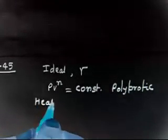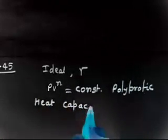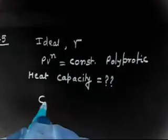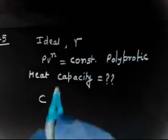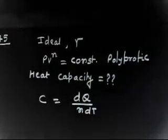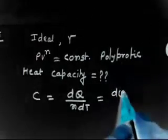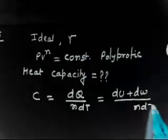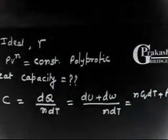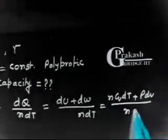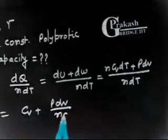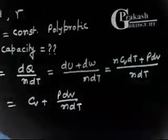We want to find the heat capacity for this process. We have already defined heat capacity C as dQ divided by n·dT. And dQ equals dU plus dW, so this gives us C equals dU/n·dT plus p·dV/n·dT. Since dU equals n·Cv·dT, this becomes C equals Cv plus p·dV divided by n·dT.